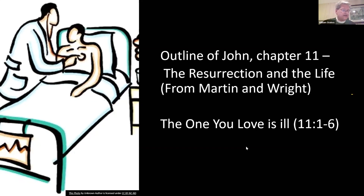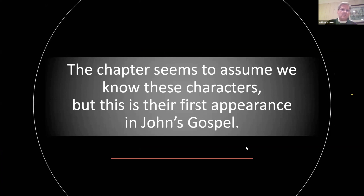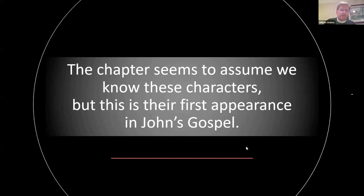The chapter opens with a terse introductory sentence: 'A certain man was ill, Lazarus of Bethany, in the village of Mary and her sister Martha.' The chapter seems to assume we know these characters, but this is their first appearance in John's gospel. The narrator tells us Mary was the one who anointed the Lord with perfume and wiped his feet with her hair. The Greek is clear that this particular action has already happened, at least from the reader's perspective. But in John's gospel, the anointing of Jesus isn't related until chapter 12, the next chapter.